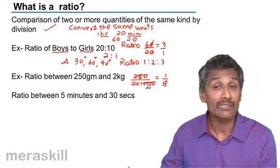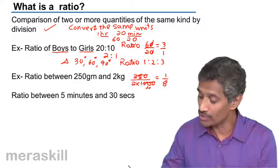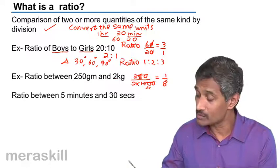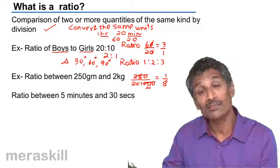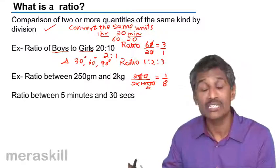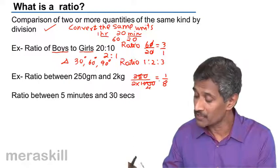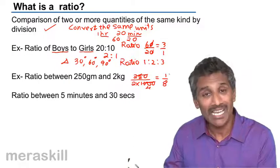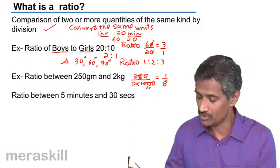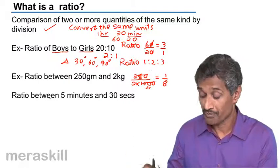So the ratio between 250 grams and 2 kg is 1 is to 8. And the ratio of 2 kg to 250 grams would be 8 is to 1, which is the inverse ratio.